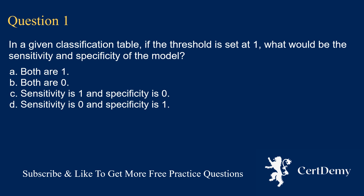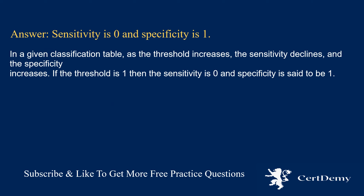Question 1. In a given classification table, if the threshold is set at 1, what would be the sensitivity and specificity of the model? Options: both are 1; both are 0; sensitivity is 1 and specificity is 0; sensitivity is 0 and specificity is 1. The answer is: sensitivity is 0 and specificity is 1.